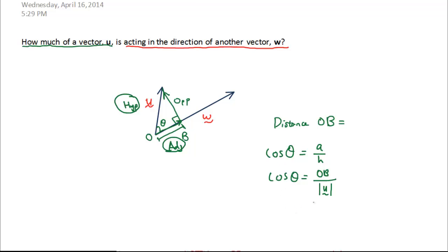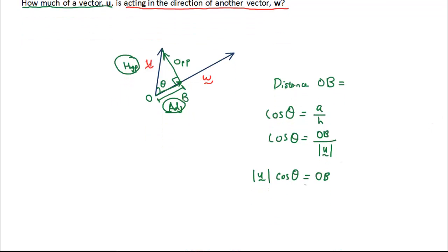I should explain the last part. So therefore, ob is equal to the magnitude of u times cosθ, right, by some simple rearrangement, moving this from the bottom to the top on the other side. So, ob is therefore equal to the magnitude of u times cosθ.